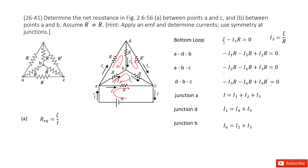Then we look at point A, where current is conserved: I equals I1 plus I2 plus I3. Then at point D, current conservation gives I1 equal to I5 plus I4. Then at point B, I6 equals I2 plus I5.